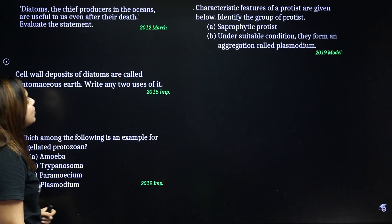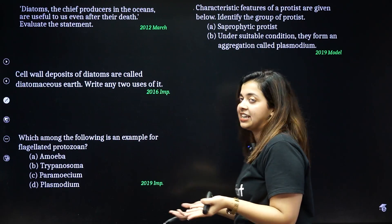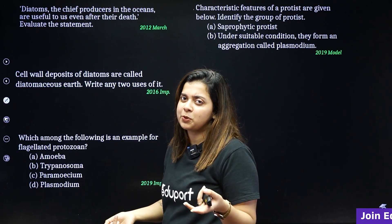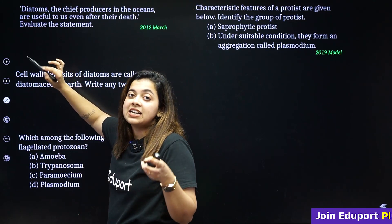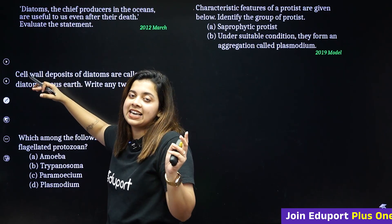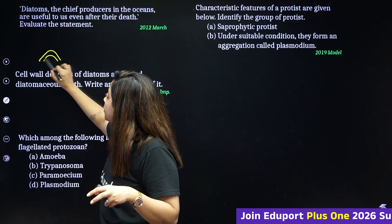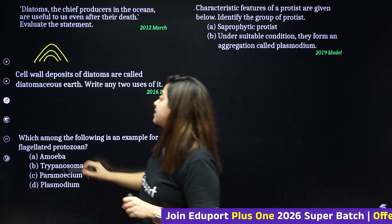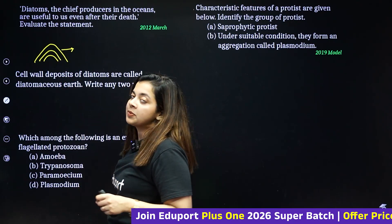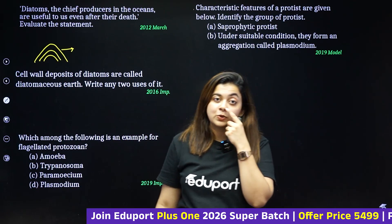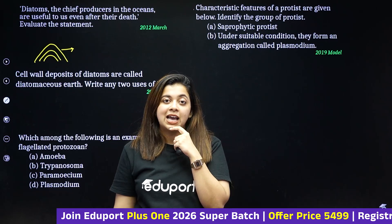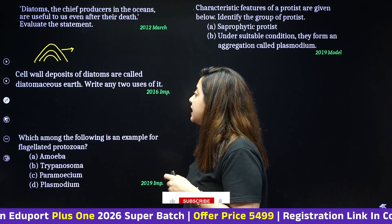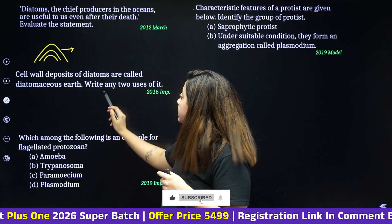Diatoms are the chief producers in the ocean and are useful to us even after their death — evaluate this statement. Diatoms have silica in their walls. After death, the silica deposits accumulate and are found as diatomaceous earth in riverbeds. Diatomaceous earth is used for polishing and in filtering oils and syrups. Cell wall deposits of diatoms are called diatomaceous earth.